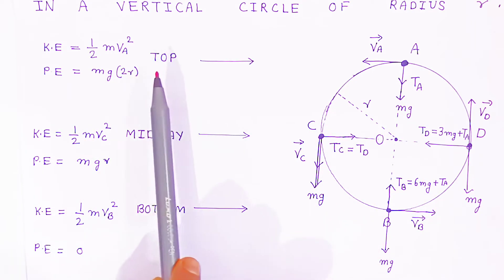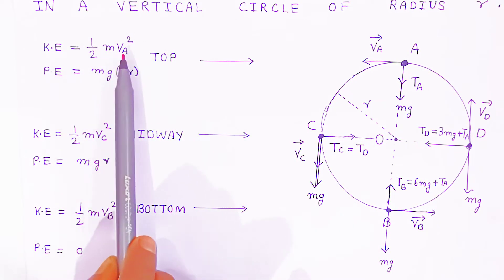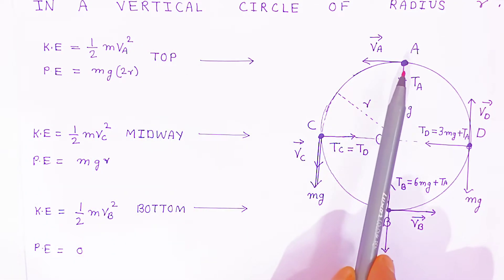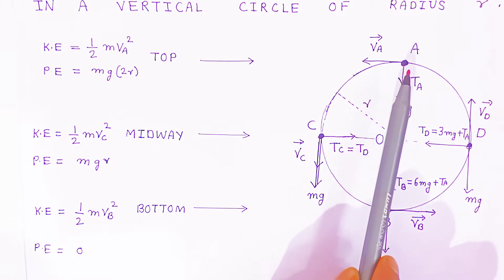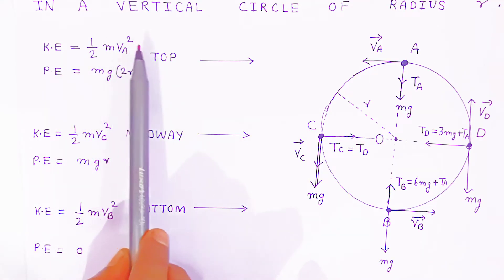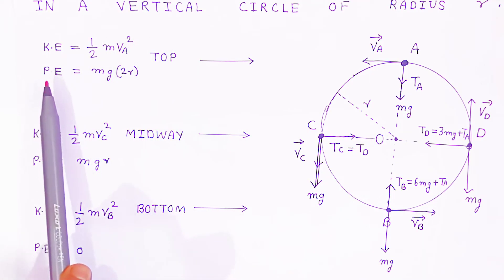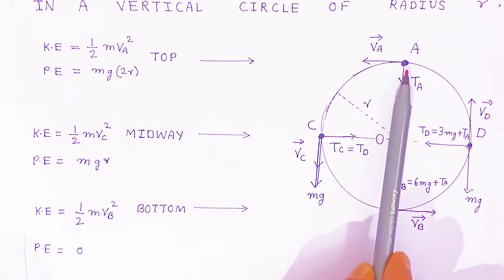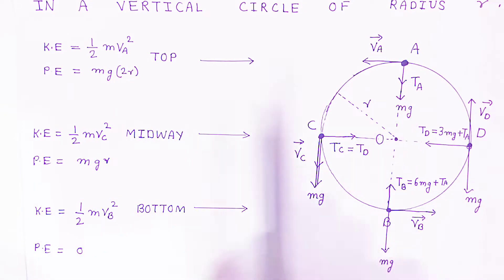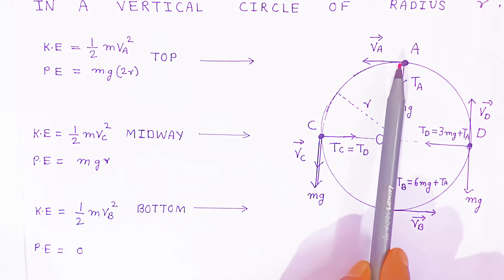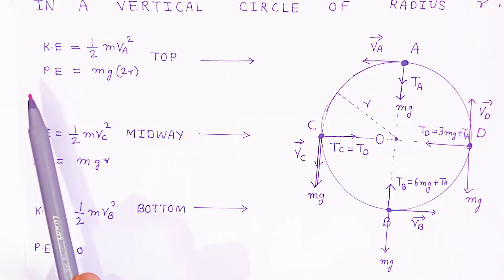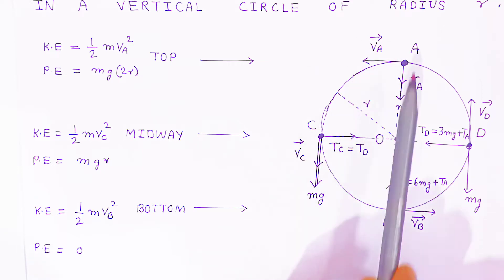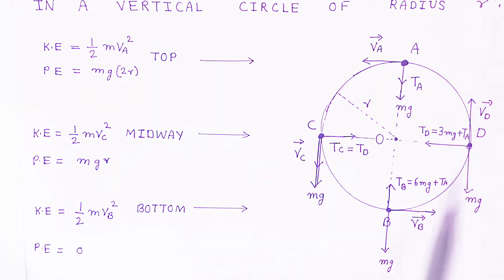At the top, the kinetic energy will be ½Mv²_A. At the top, the potential energy is equal to Mgh, where h is radius plus radius, that is 2R — the diameter of the circle. So at the top, kinetic energy is ½Mv²_A and potential energy is Mg(2R).